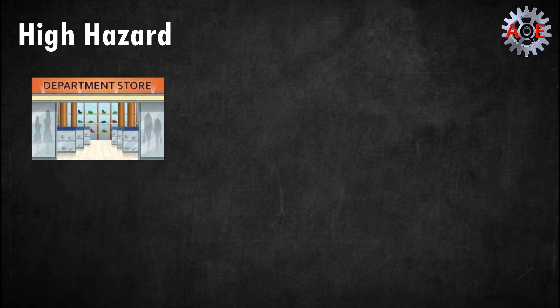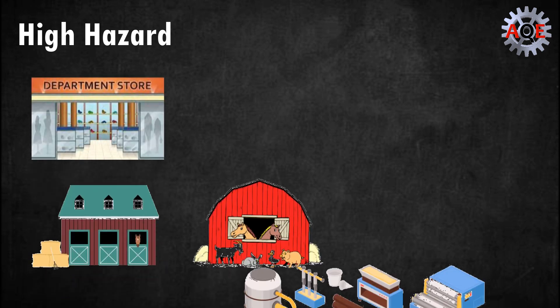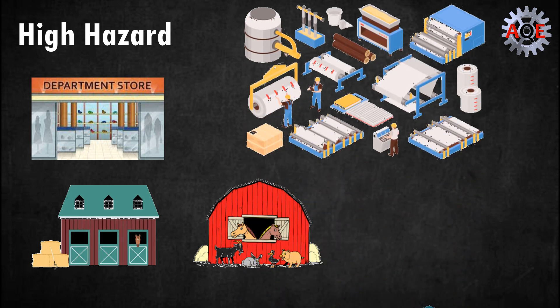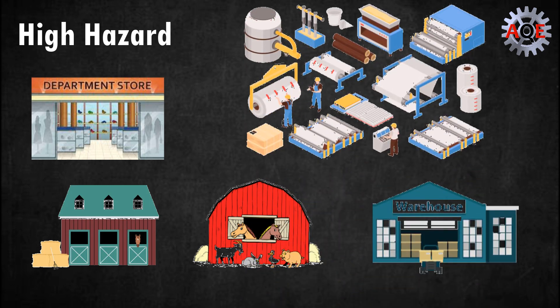Some buildings that are commonly classified as high hazard environments are department stores, stables, barns, feed stores, freight terminals, pulp and paper mills, wharves and piers, and warehouses storing paint, furniture, or paper.